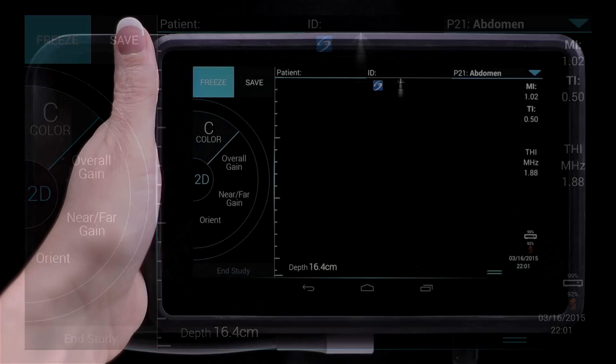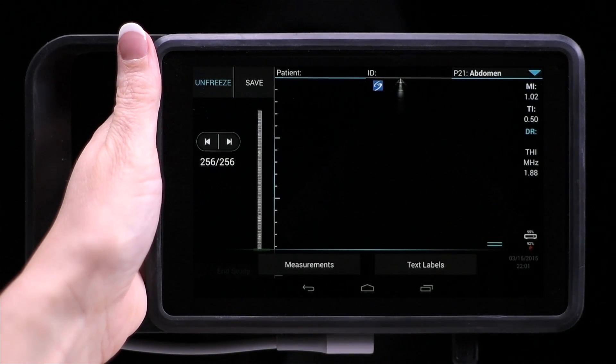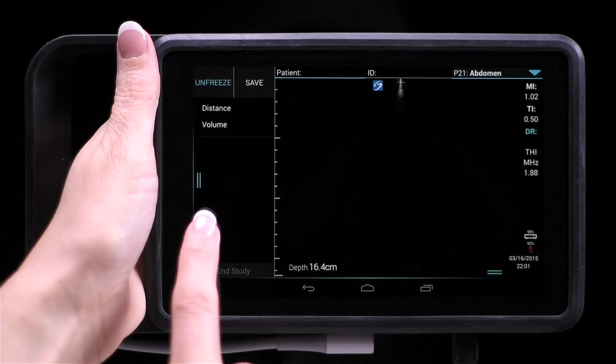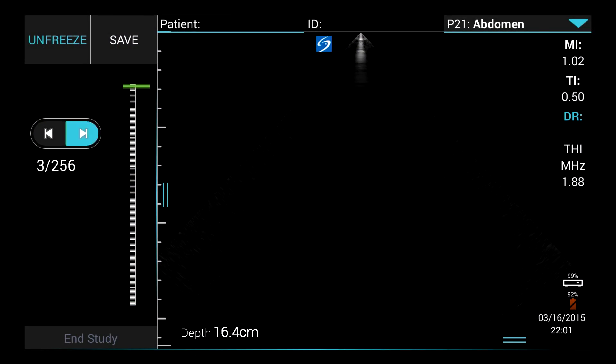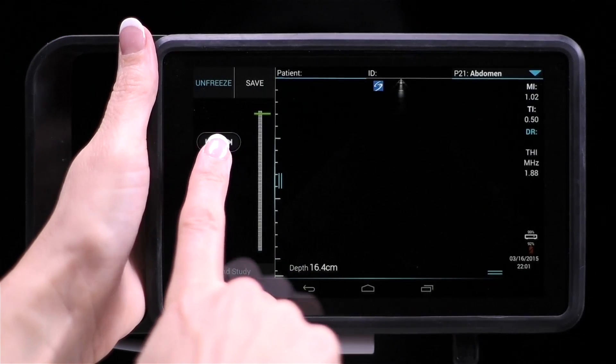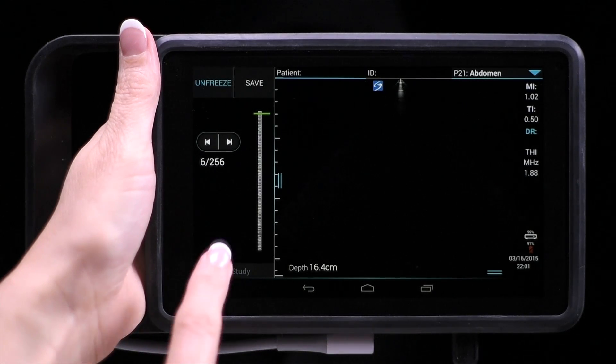If you are taking measurements while an image is frozen, you can pull open the Cine to change the view. Then just close it again to go back to measurements.